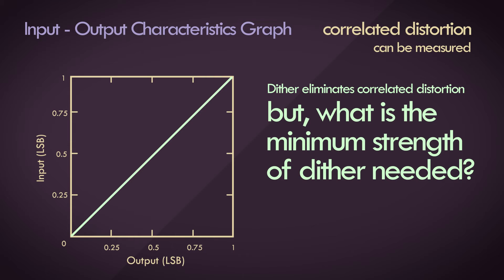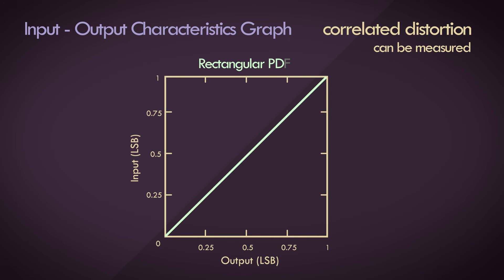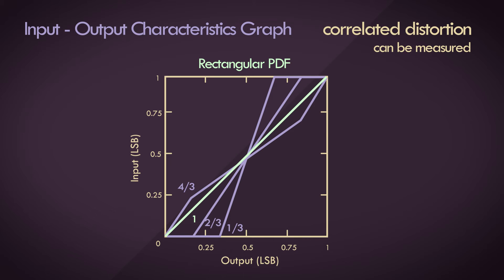The strength of a dither signal is measured in LSBs — the wider the interval, the higher the strength, and the higher the noise floor of the output after quantization. If we apply rectangular dither and average measurements over a few thousand traces, we find that at least one LSB of strength is needed to linearize the system — that's a range from negative 0.5 to 0.5. Beyond one LSB, the system loses linearity again, and regains it at every integer multiple of the LSB.